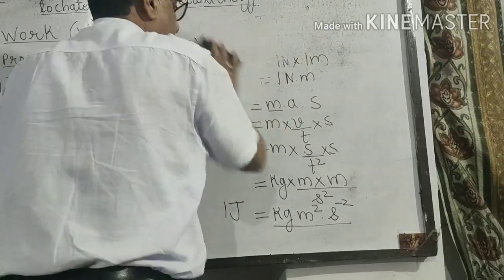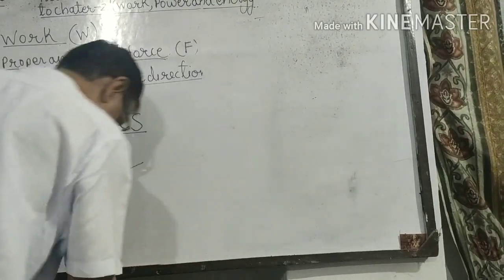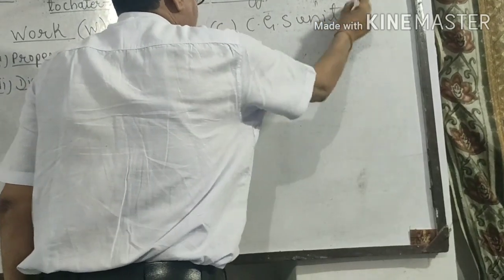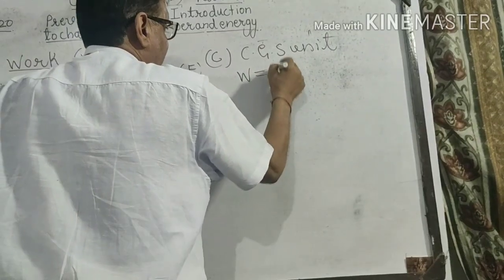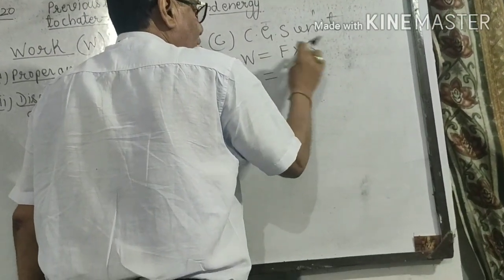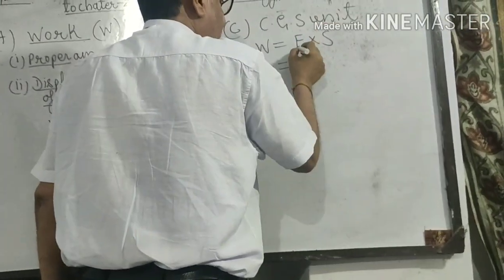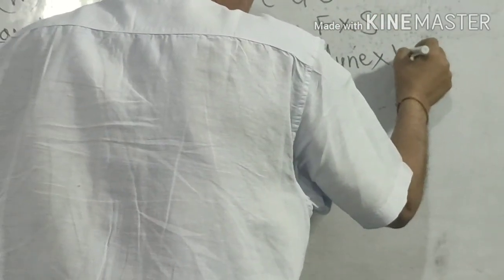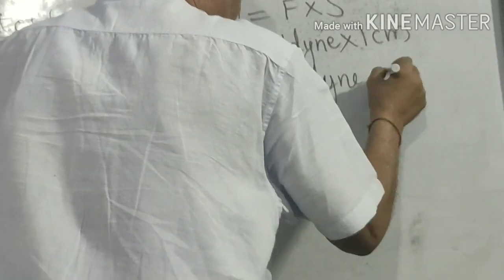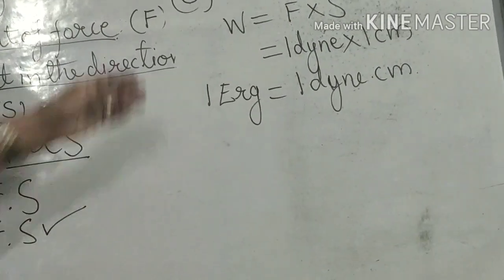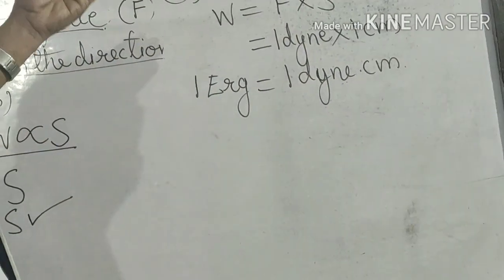Now you want to write the CGS unit. Again you will apply the same formula W = F × S. Here on the right-hand side, put the CGS units for the two physical quantities: one dyne into one centimeter. So it comes one dyne into centimeter — in short we call it Erg. So all these are the CGS and SI units of work. You should remember that.